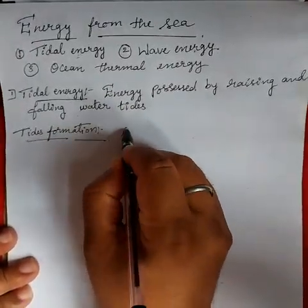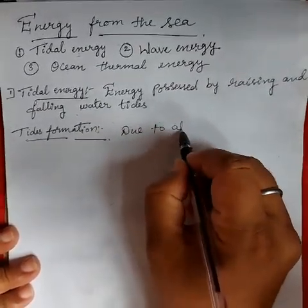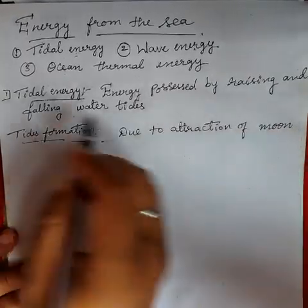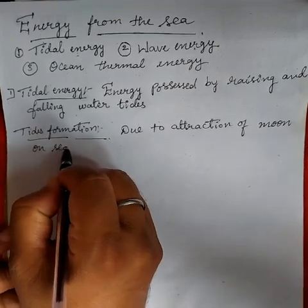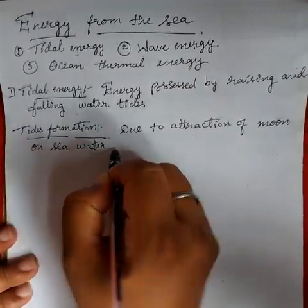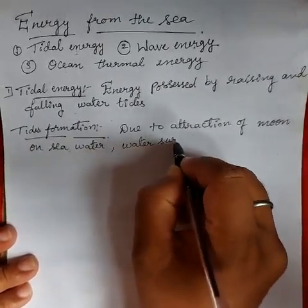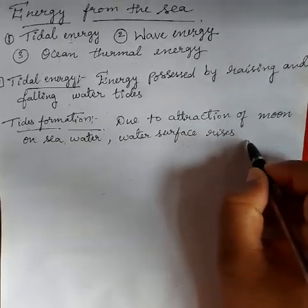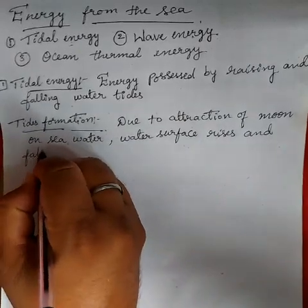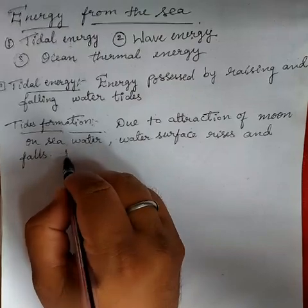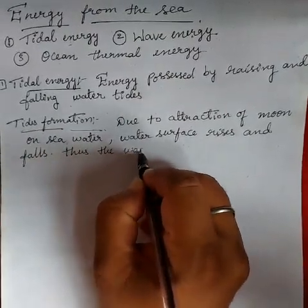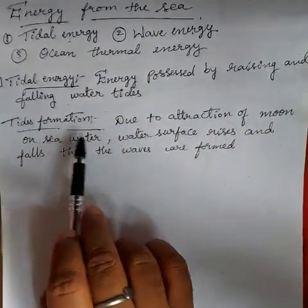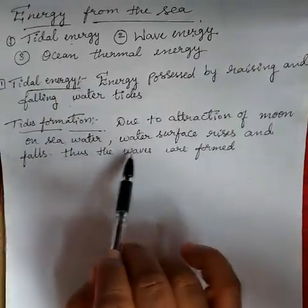So due to the attraction of the moon on sea water, the water surface rises and falls, and thus the waves are formed. So the tides are formed due to the attraction of the moon on sea water — the water surface rises and falls, and thus the waves are formed.